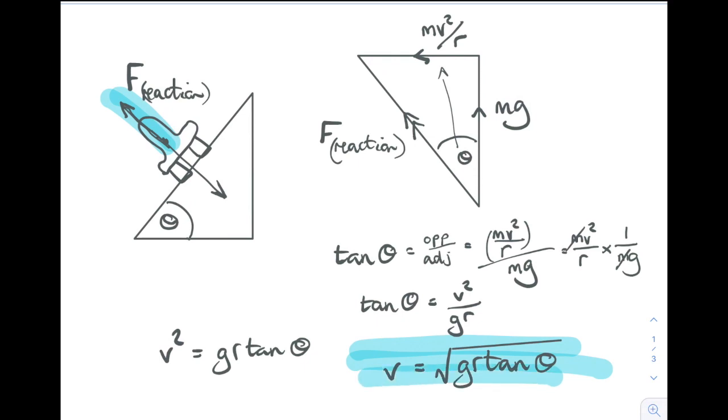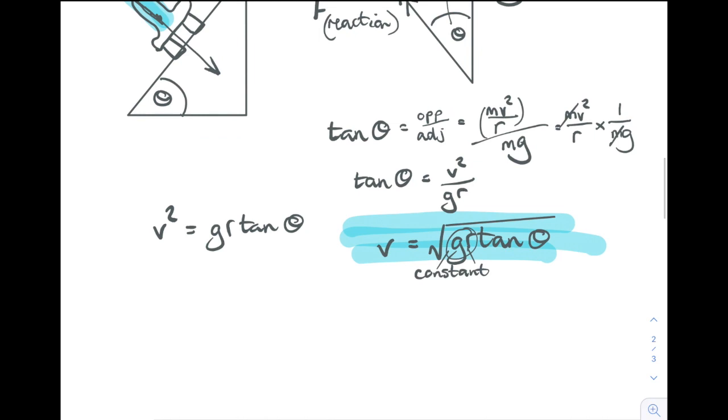Now, g is a constant and r is a constant—the radius of the circle and the gravitational field strength. Therefore, the only thing that affects your speed around the track is the angle of the banking, theta.